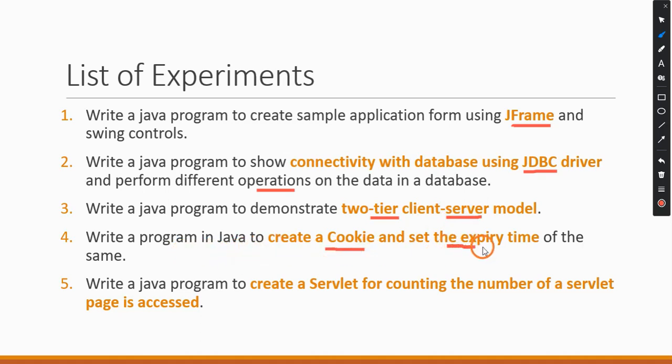In the fourth program, they are asking to create a cookie and set its expiry time. A cookie is a concept where you can store data on the client side — within the browser — such as user ID, date and time, or session ID. All that kind of data can be stored in cookies on the client side.